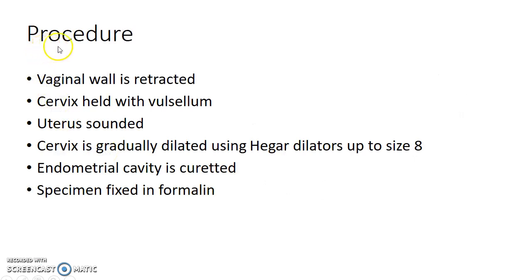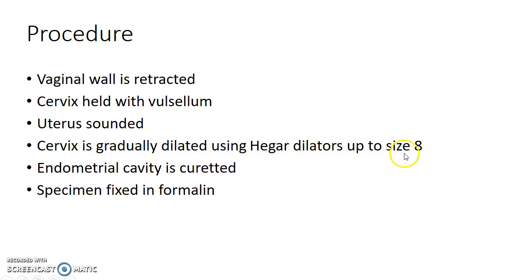Now let us see about the procedure of DNC. The vaginal wall is retracted and the cervix is held with vulsellum. The uterus is sounded. The cervix is gradually dilated using Hegar dilators up to size 8. The endometrial cavity is curetted using the curette and the specimen is fixed in formalin.